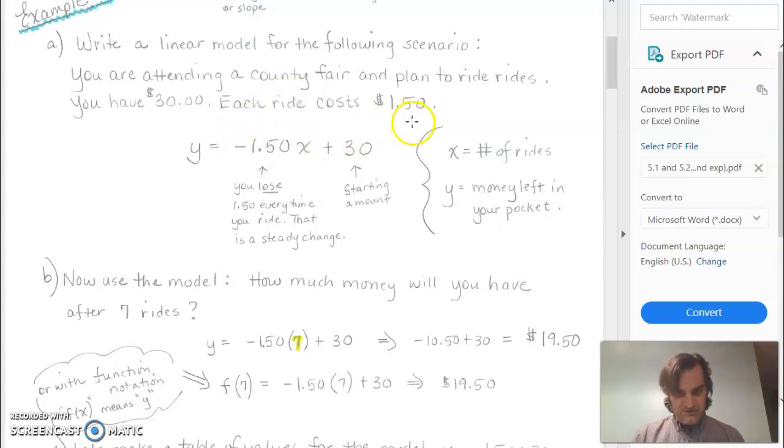So the $1.50 is the rate of change, and our amount of money is going down. That's why it's a negative. And the $30 is the constant or the starting amount. That's how much we started with.